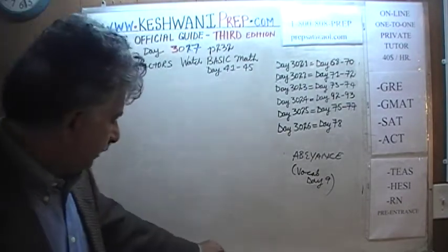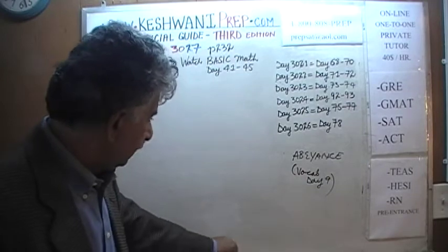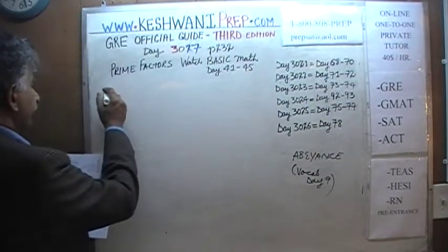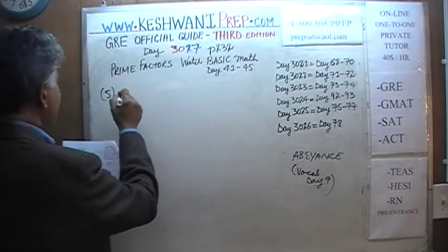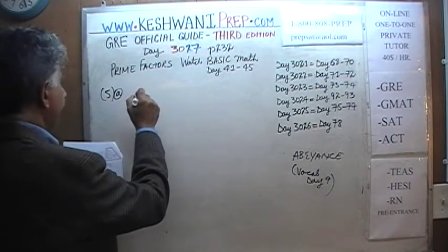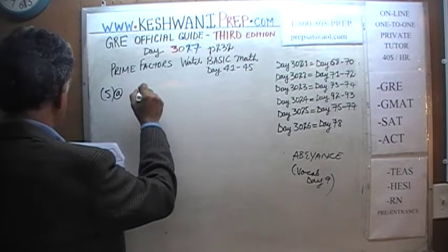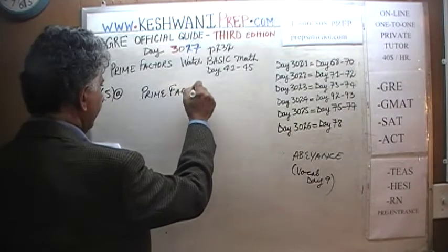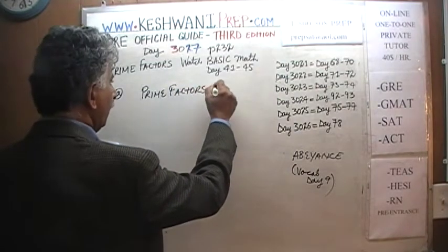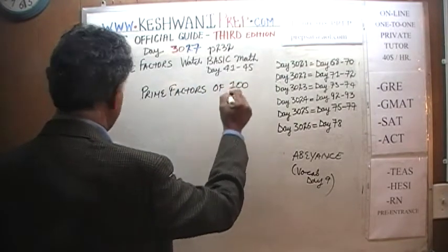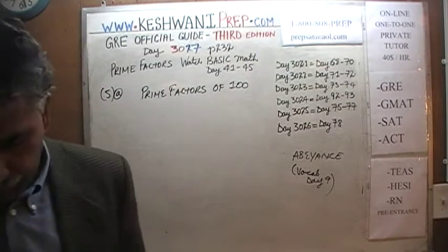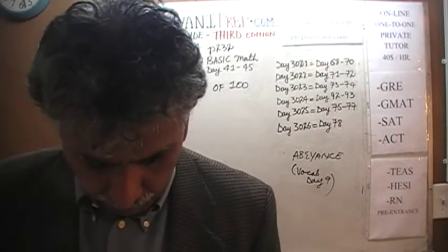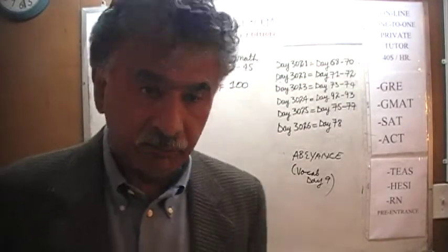We are on page number 232, and we are going to work on problem number 5, part A. It says: what are the prime factors of 100? Let's find out, shall we?